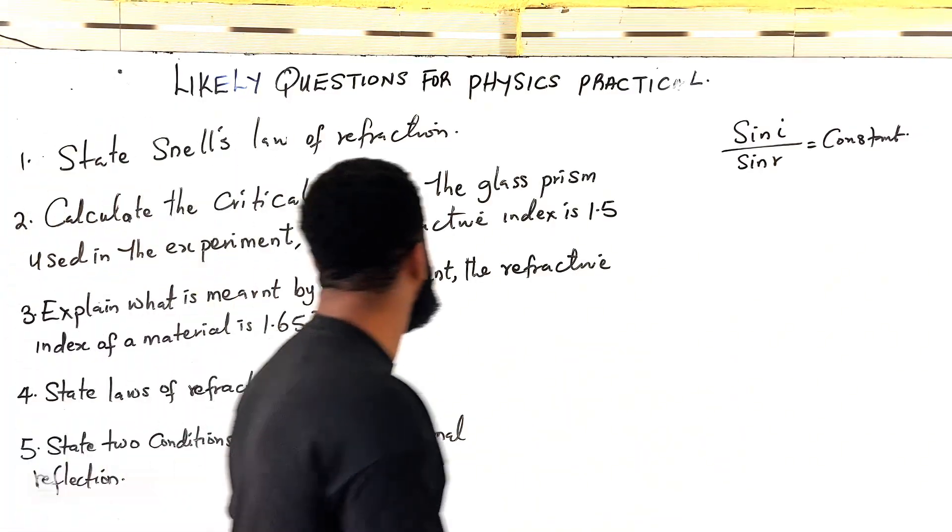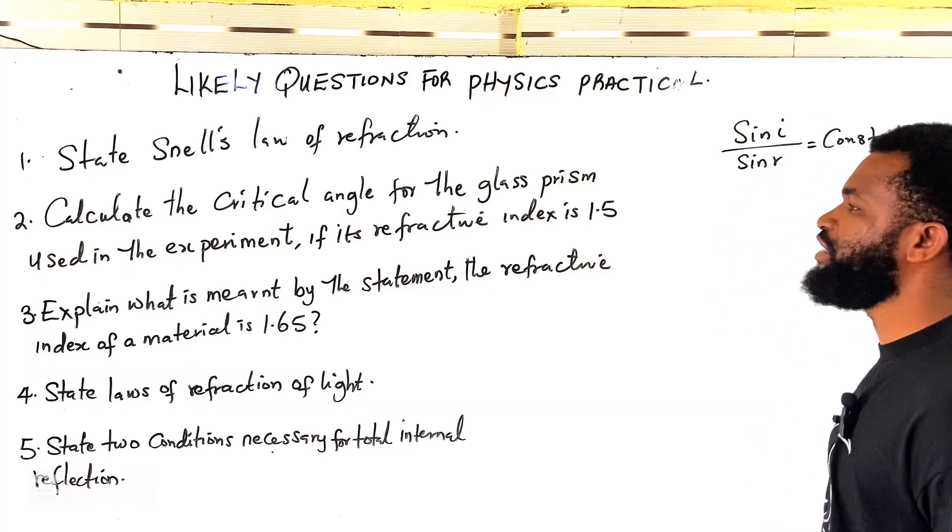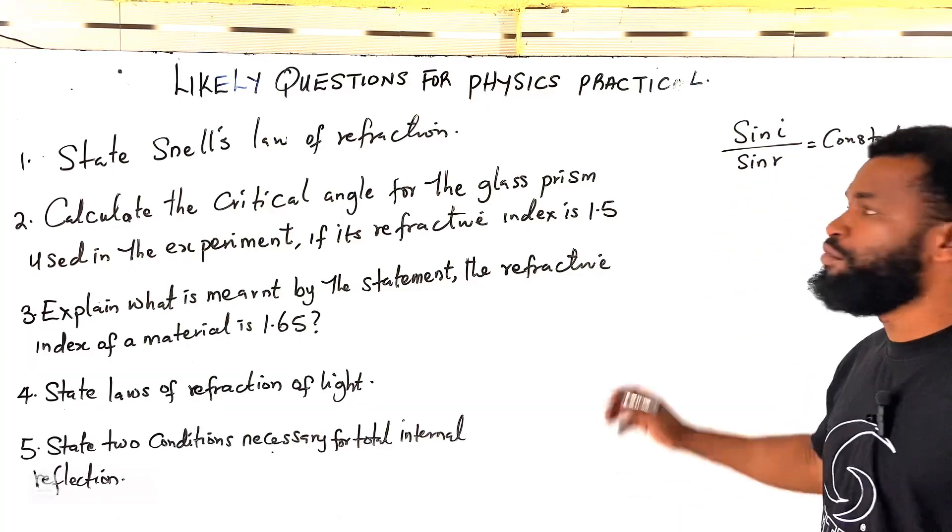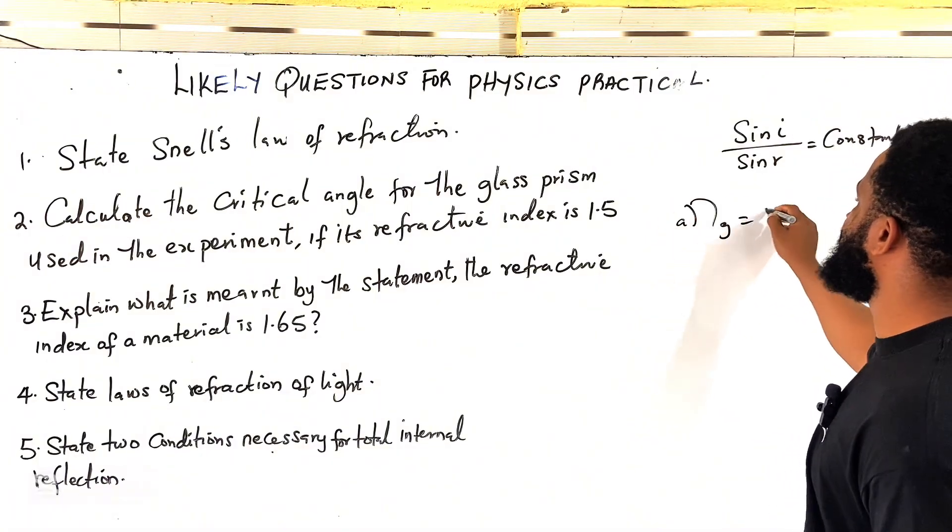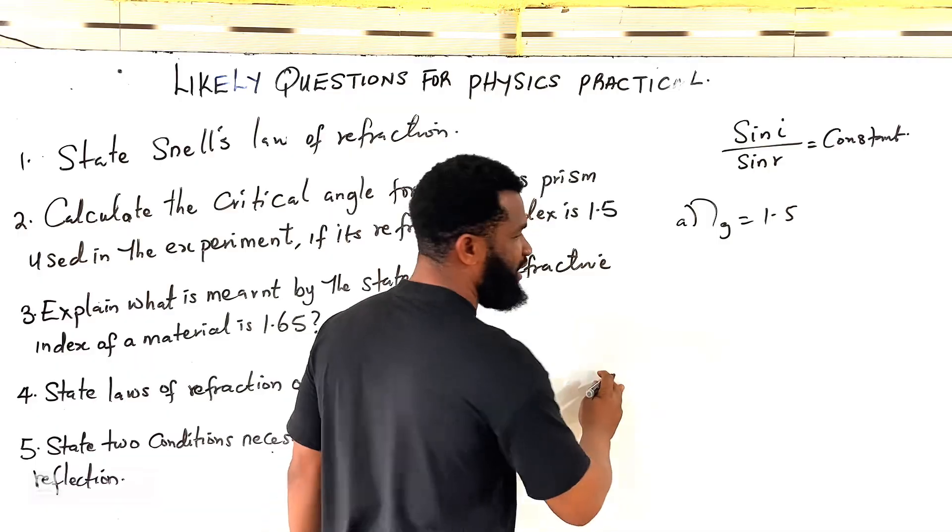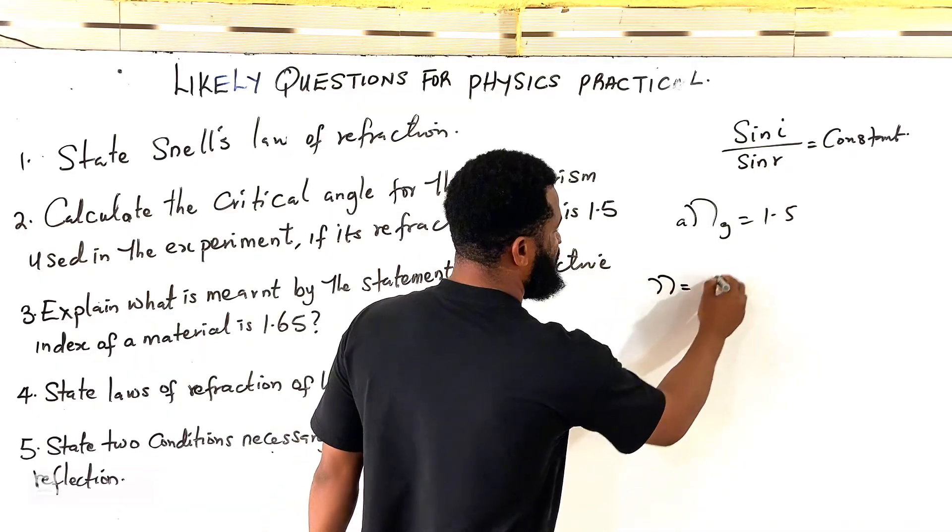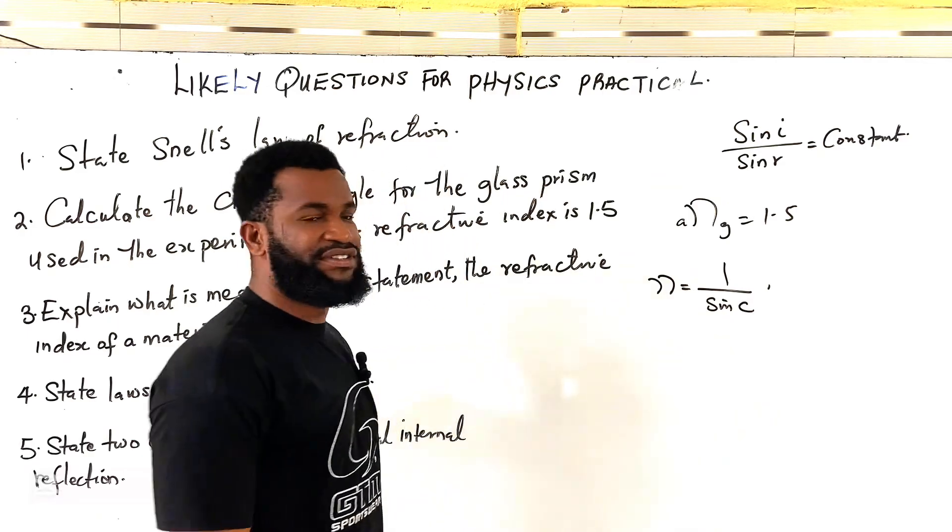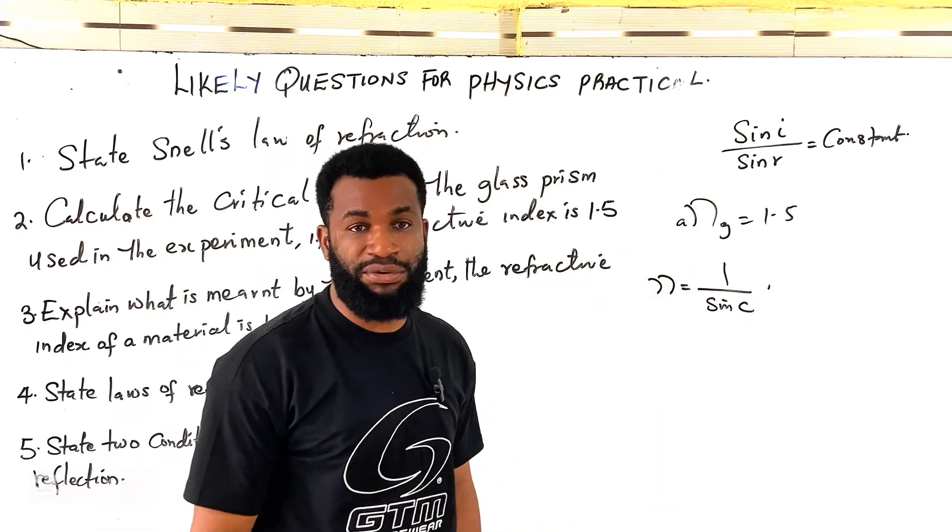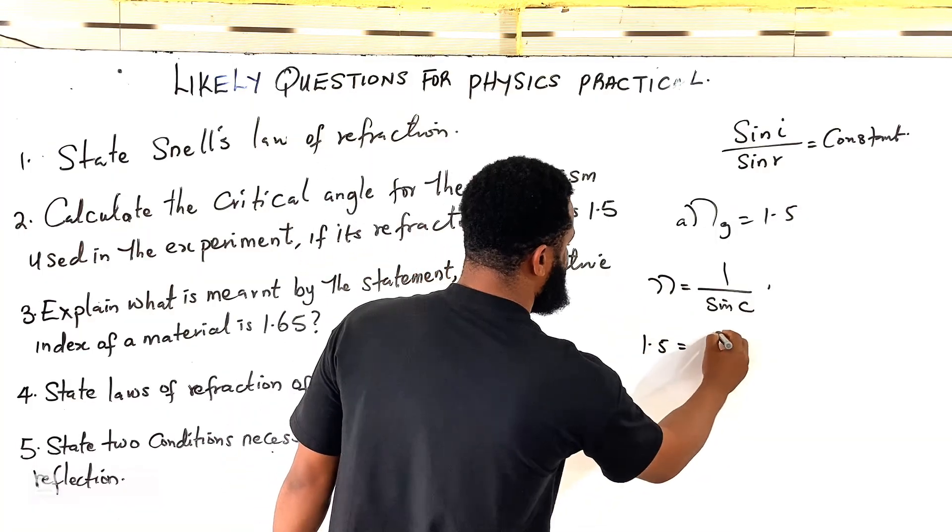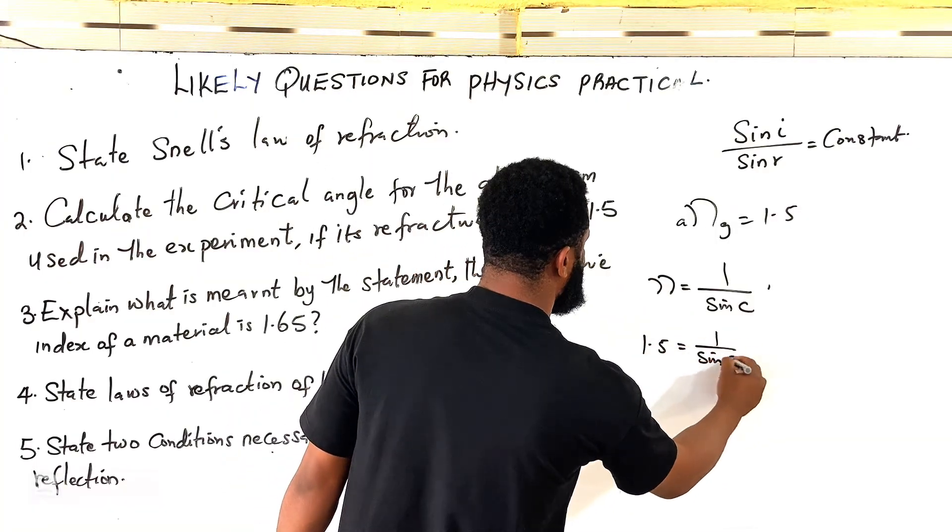Number 2, calculate the critical angle for the glass prism used in the experiment if its refractive index is 1.5. When light is going from air to glass, refractive index is always 1.5. So what should I say? I will say that refractive index is equal to 1 over sine C. What is C? C is seen as the critical angle. Therefore, this refractive index is given as 1.5 is equal to 1 over sine C.